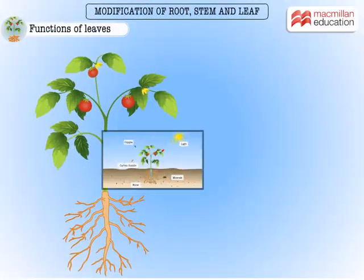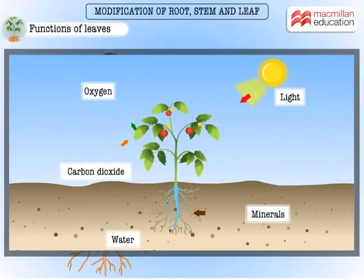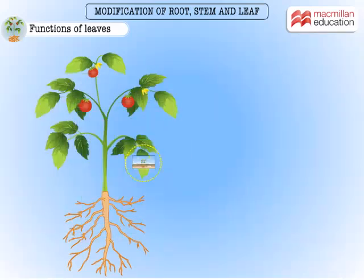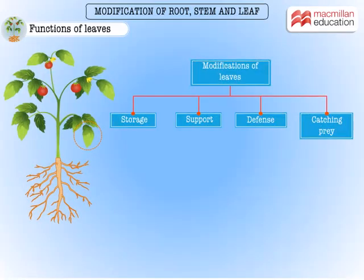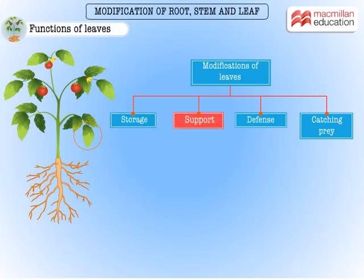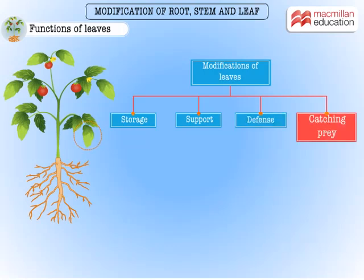We all know that the primary function of leaves is photosynthesis. Leaves of some plants are modified to perform specialized secondary functions such as storage of food, mechanical support, defense against grazing animals, and prey catching. Let us see some examples for each of these.